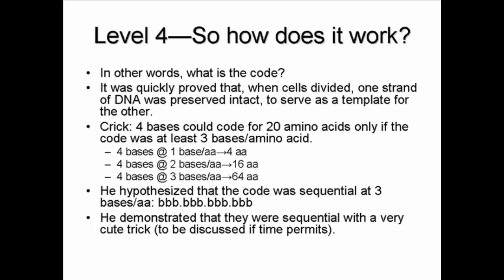Sixteen amino acids from two bases — close, but no cigar. Three bases, however, could produce 64 combinations, and therefore three had to be the minimum number of bases needed to encode for an amino acid.